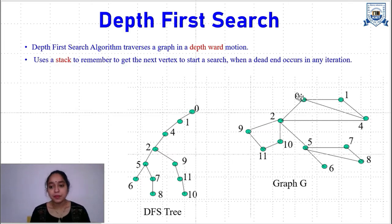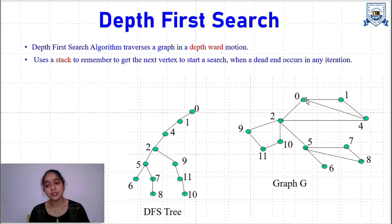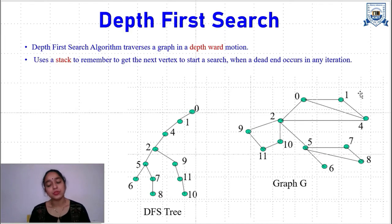For example, suppose this is our graph G. We are starting with a traversal — we can start with any vertex as a starting vertex. I have taken 0 as a starting vertex, labeling the vertices 0, 1, 2, 3 and so on. We are going to the depth of 0, so we move towards its child. The adjacent nodes of 0 are 1, 4, and 2. I have started with 1, so we have gone from 0 to 1.